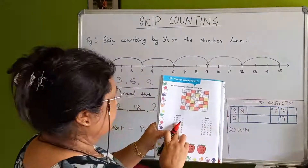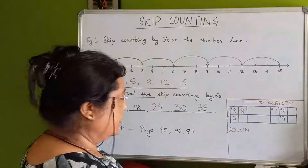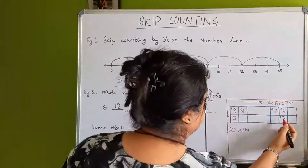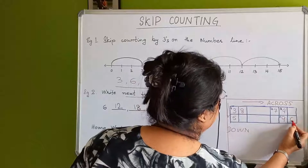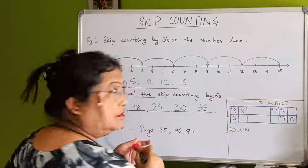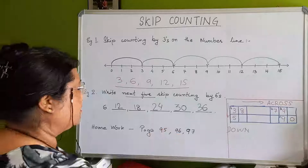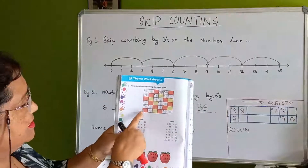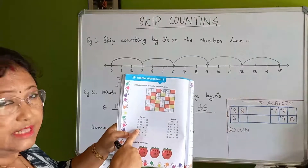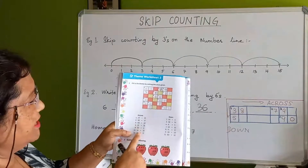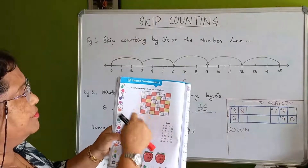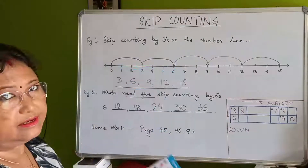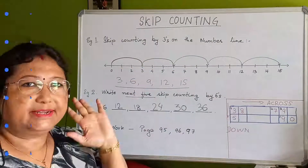Now number five: 80 plus 10 equals 90 — this is across, so 9 is here, you just write 0 to make 90. So like this, please complete page 96. The hints are given and you have to add and complete the crossword box. You can do the next box on your own. Okay children, bye, take care.